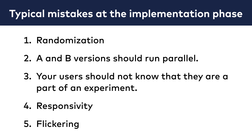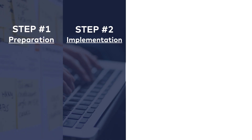So watch out for these 5 things — they are obvious mistakes, but I see them happening from time to time. We are done with the second step of executing a great A/B test. If you have done everything right so far at the preparation and implementation steps, then you came up with a promising, well-founded A/B test idea and set it up properly. There are only two steps left: running the A/B test and then evaluating it.